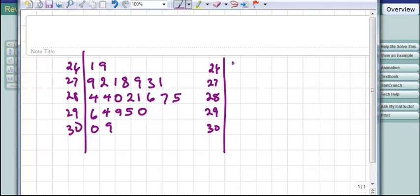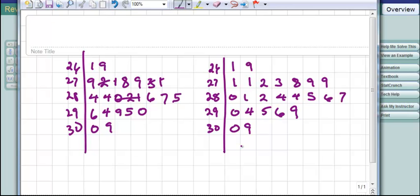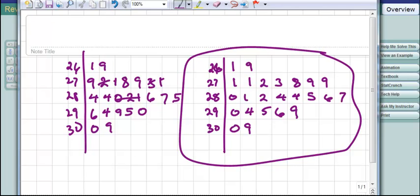So this is a stem and leaf. So this is an ordered stem and leaf. One and nine. And here we go. One, one, one, one, two, three. One, one, two, three. And you got eight and two nines. For 28, we got a zero, one, and two. And then two fours, a five, a six, and a seven. And this one goes zero, four, five, six, nine, and zero, nine. So in order, we just put our data in order. 26.1, 26.9, 27.1, 27.1, and so forth. So this is what the plot should look like.